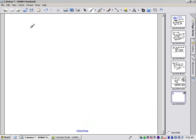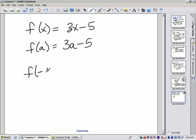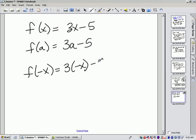Now, some of these require you to plug in other things besides just numbers. Like if I have f of x is equal to 3x minus 5, and I ask you to find f of a, that just says replace the x with an a, and there's nothing you can do to simplify that. What if I ask you to find f of negative x? That would say replace the x with negative x, and then simplify, because 3 times negative x is negative 3x minus 5.